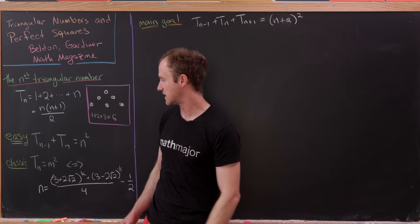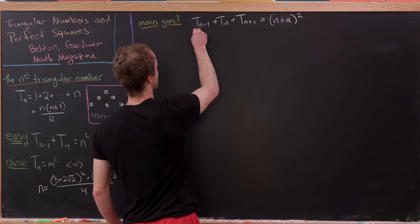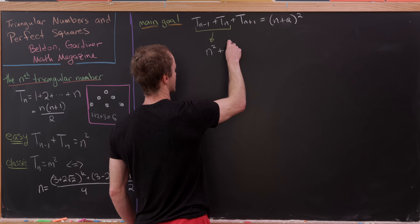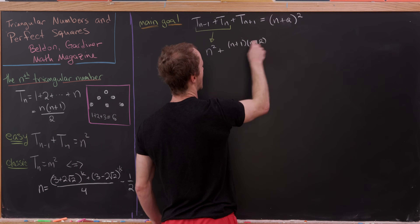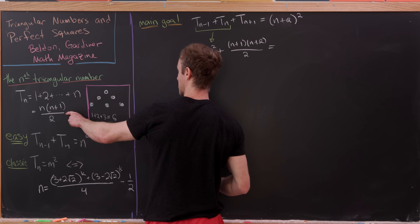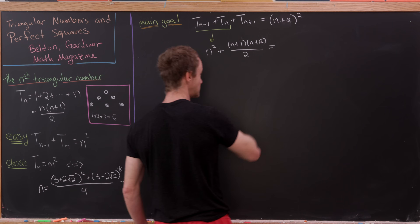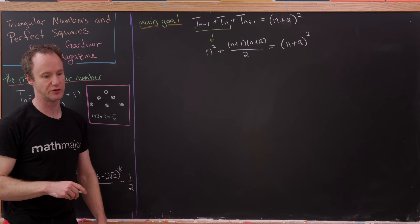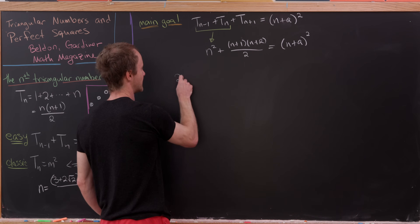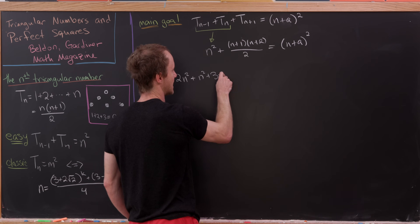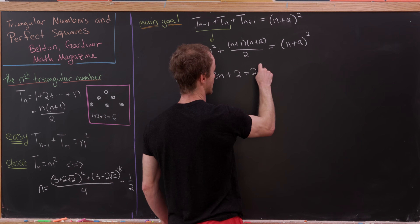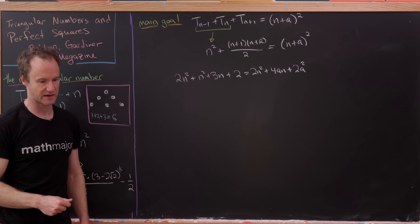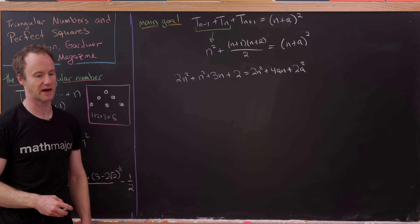Let's see what this boils down to. By the earlier result, t_{n-1} plus t_n is simply n squared. So this immediately gives us n squared. The next term gives us n plus 1 times n plus 2 all over 2, by substituting n plus 1 for n in that formula. On the right side we have n plus a, quantity squared. Multiplying both sides by 2 and expanding, we get 2n squared plus n squared plus 3n plus 2 equals 2n squared plus 4 times a times n plus 2a squared.